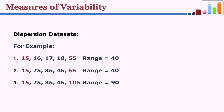Another example: if the scores are 15, 25, 35, 45, and instead of 55 it is 105, the range gets affected immediately because of that one extreme highest score. So the range here is 90 (105 minus 15). Range is unreliable but it is a very crude measure that gives us an idea of how the scores are dispersed in a distribution.